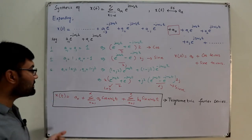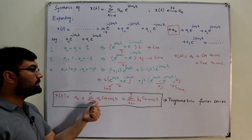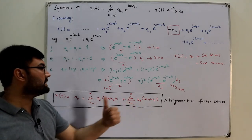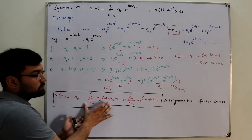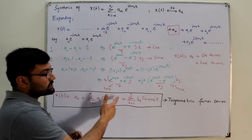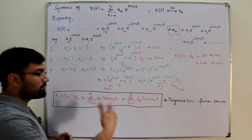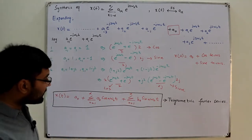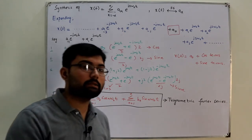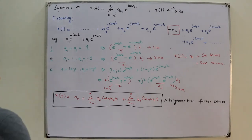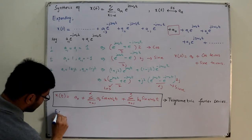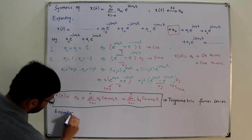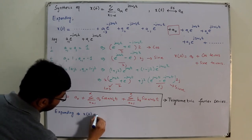The next step is to find the DC value a₀, the aₙ's, and the bₙ's. The cosine terms depend on n and ω₀; the sine terms depend on n and ω₀. But how do we find aₙ? We need formulas, so we expand x(t) = a₀ + a₁cos(ω₀t) + a₂cos(2ω₀t) + a₃cos(3ω₀t) + ... + aₙcos(nω₀t) + b₁sin(ω₀t) + b₂sin(2ω₀t) + ... + bₙsin(nω₀t).